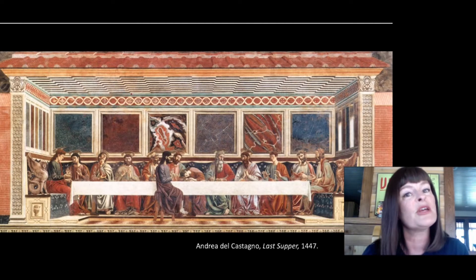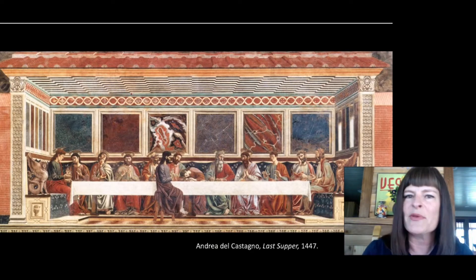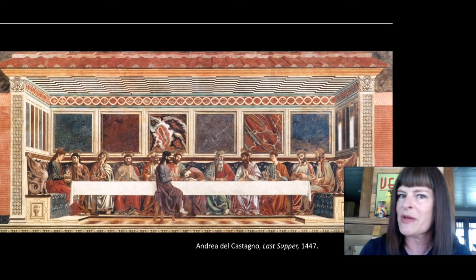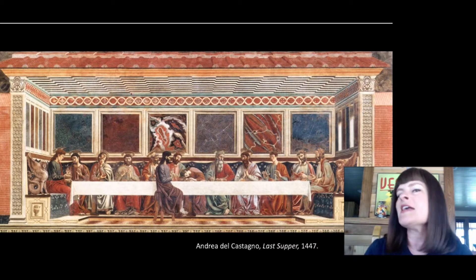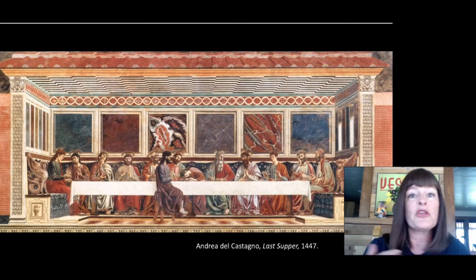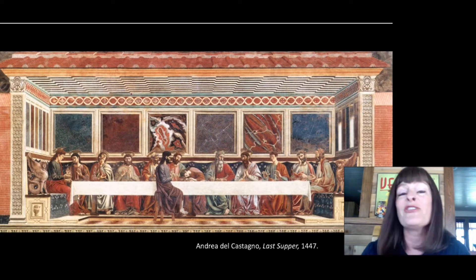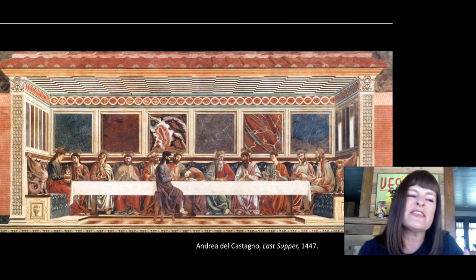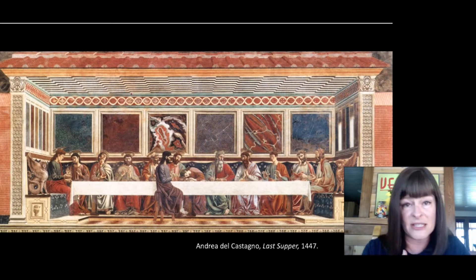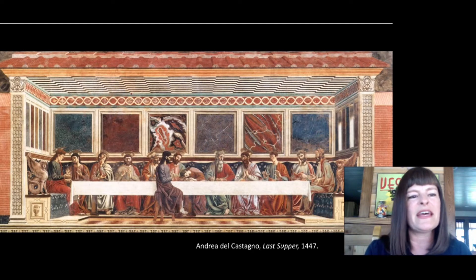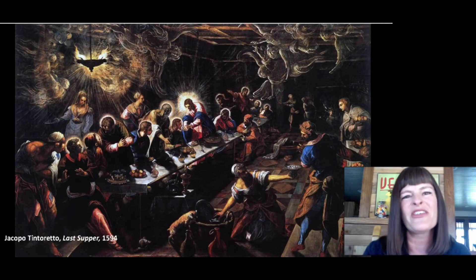I'm showing you a couple of examples of those. This is a painting that predates da Vinci's, by a different artist named Andrea del Castagno. In del Castagno's painting, Judas is painted on the total opposite side of the table from every other disciple. This physical separation signifies his spiritual separation from the group — the typical way Judas appeared in Last Supper paintings of that period. Da Vinci changed things up by putting Judas on the same side of the table as all the other apostles.